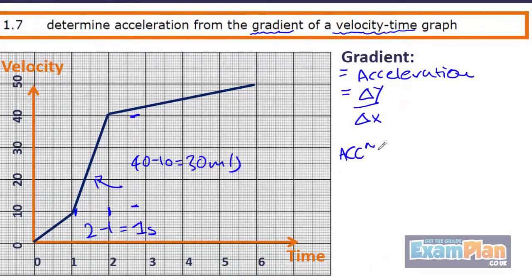So, the acceleration becomes 30 m per second divided by 1 second, and so the answer is 30 m per second squared.